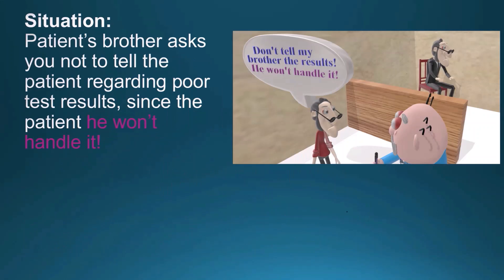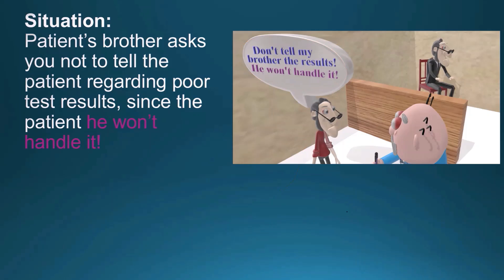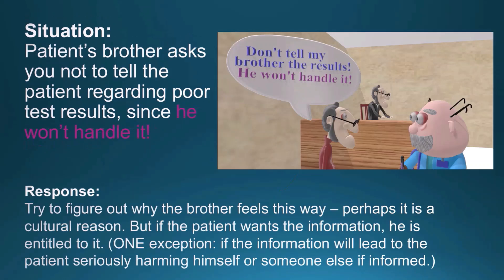Withholding results. A patient's brother asks you not to tell the patient about poor test results, since the patient won't be able to handle it. What do you do? Try to figure out why the brother feels this way — perhaps it is a cultural reason. But if the patient wants the information, he is entitled to it. The one exception is if the information will lead to the patient seriously harming himself or someone else — then you should not give the information.